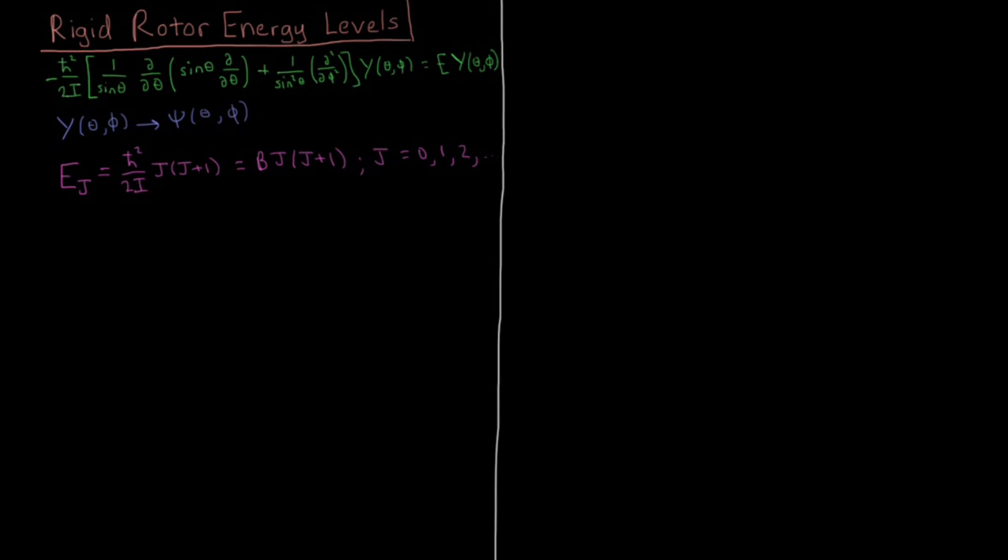In this video we're going to look at the energy levels when we solve the Schrödinger equation for the rigid rotator. So we have our Schrödinger equation in which we have our Hamiltonian, which consists entirely of kinetic energy, there's no potential.